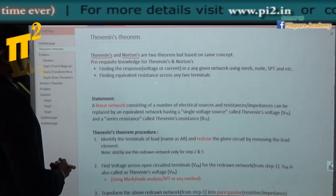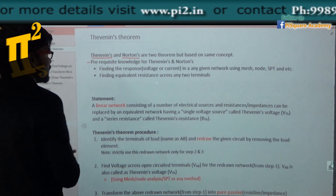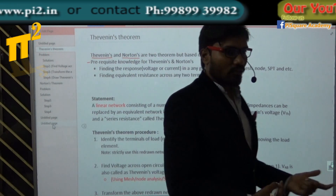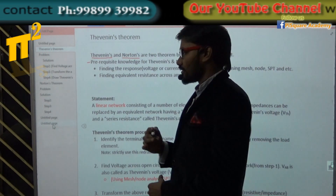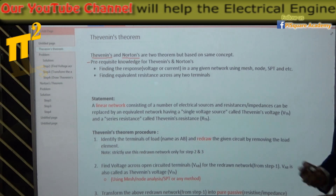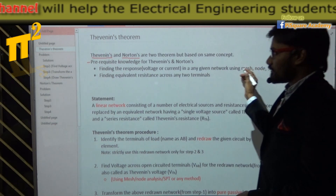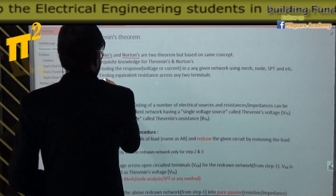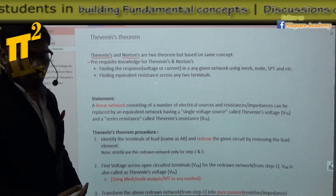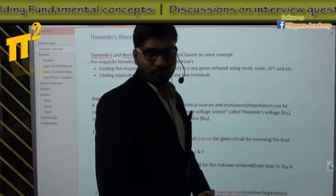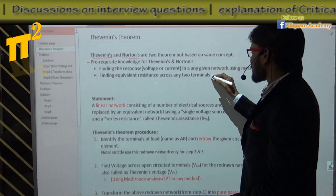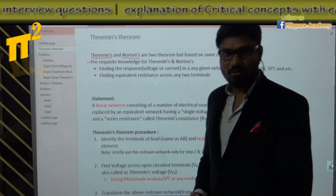The main content is the same. So what is the prerequisite knowledge required? You should know how to find a response — response by means of current or voltage — for a given network using conventional methods: mesh, node, superposition, or any other method. Second, you should know how to find equivalent resistance across any two terminals. We have a video on that — link in the description. If you understand these two clearly, there is nothing much complicated with Thevenin's.